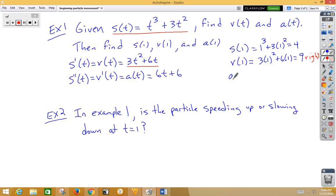Then let's get acceleration at 1. So if we plug into our acceleration function, we get 6 times 1 plus 6 or 12. Now if we compare velocity and acceleration, notice that they are both positive.